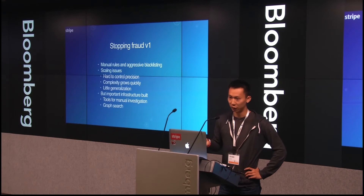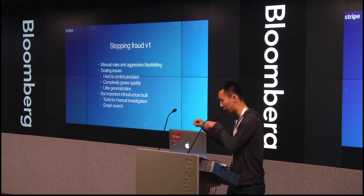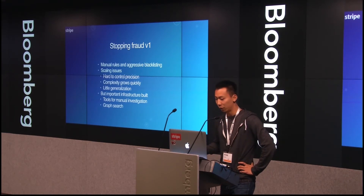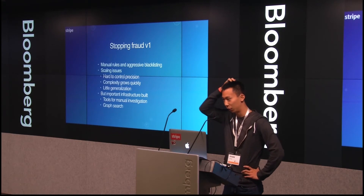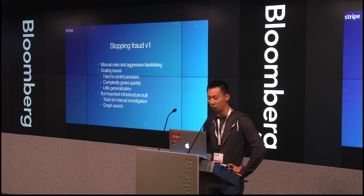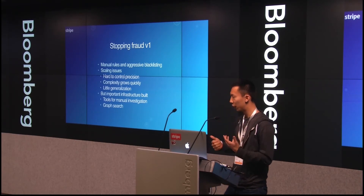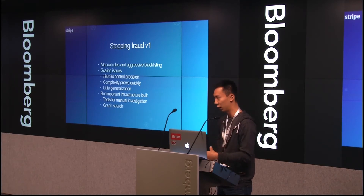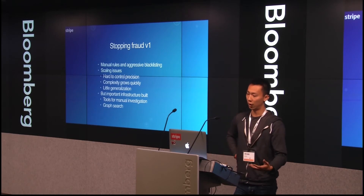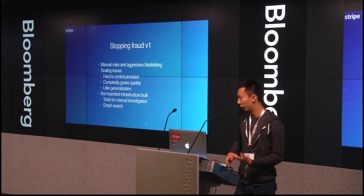The issues with scaling manual rules: it's very hard to control precision — the precision-recall trade-off. You could have no fraud if you just block every transaction, or have really specific rules for every single edge case. Complexity grows really quickly and it doesn't generalize very well. But the upshot is we got a lot of important tools from building the initial fraud system — an internal tool that lets you do graph search over charges, so you can say 'this charge looks sketchy, show me all related charges from the same email address,' and start to pick out patterns and think about what features would capture them.